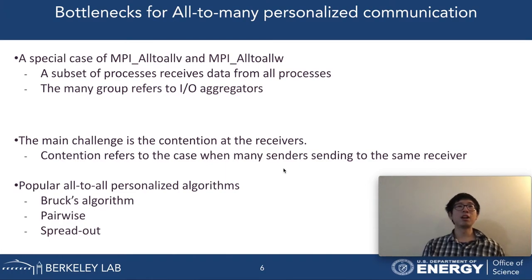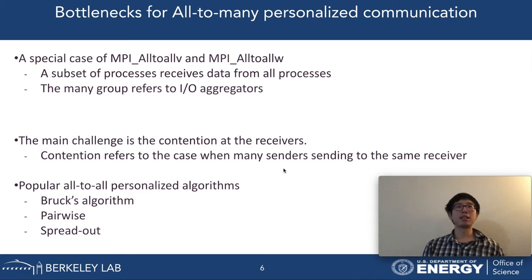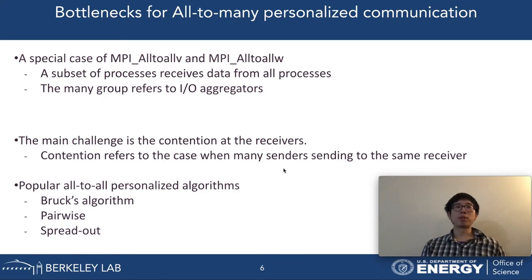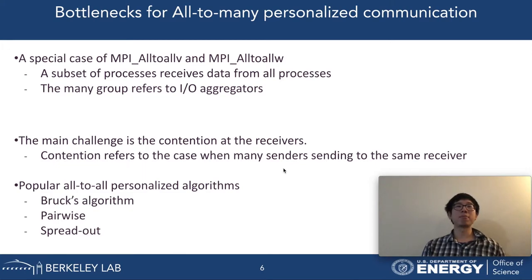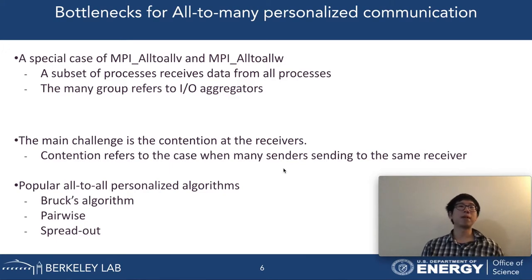Bruck's algorithm aims to optimize the number of communication steps, finishing in log(number of processes) complexity. However, its inverse binary term is not optimal, so it is usually used for small message exchanges. The Pairwise algorithm, on the other hand, finishes in exactly (number of processes minus one) steps. It is usually implemented with blocking MPI send/receive functions. The Spread-Out algorithm, adopted by the current implementation of MPI_Alltoallw in MPICH, allows asynchronous MPI functions.